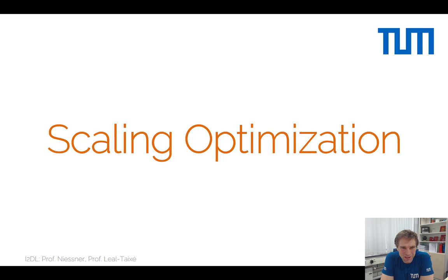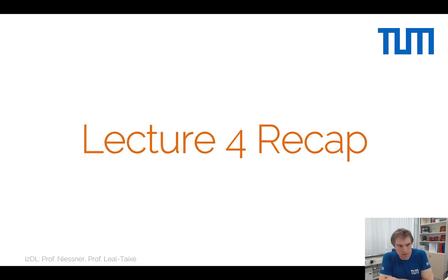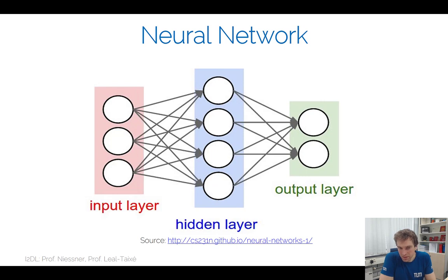Hello everyone, welcome to the deep learning lecture. Today is the fifth lecture, and we're going to continue talking about how we do optimization of neural networks. In the previous lectures we already introduced the neural network, so we roughly know what they are. A neural network has layers: an input layer, hidden layers, and output layers. These layers are connected by edges, which are essentially weights that we want to optimize.